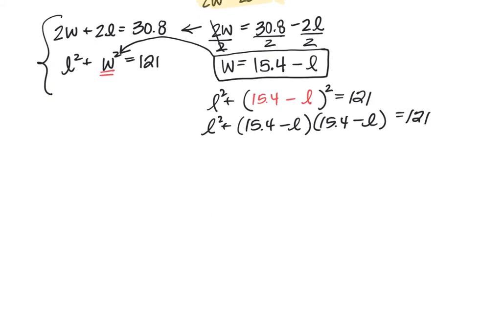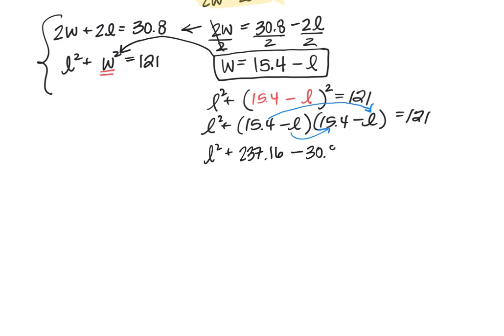So here we're going to go first, outside, inside, last. We're going to distribute or FOIL. So 15.4 times 15.4 is 237.16. Of course, you can use your calculator. Outside, we'll have 15.4 times negative L. So that's negative 15.4 L. And we'll have the same thing here when we do the inside. So we'll have a total of negative 30.8 L. And then negative L times negative L will be positive L squared, equal to 121.